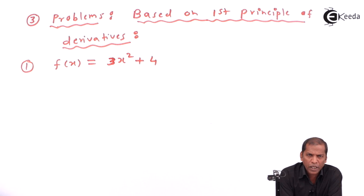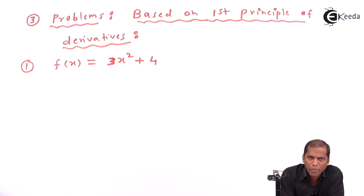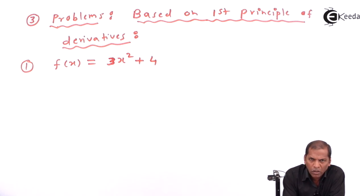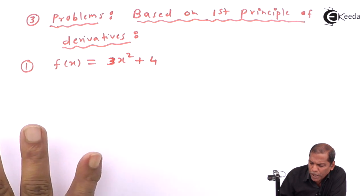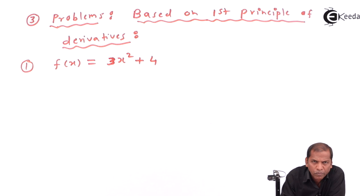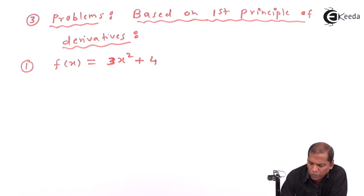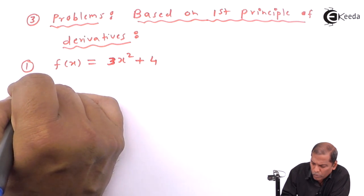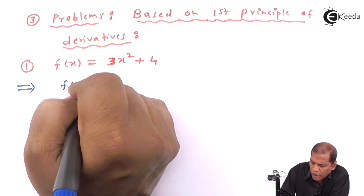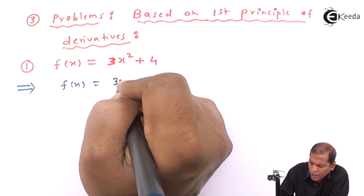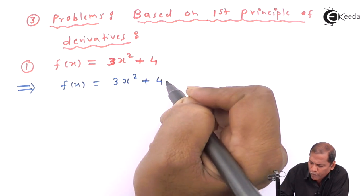Hello friends. Now we see subtopic 3, which is based on problems using the first principle of derivatives. Question number 1: f(x) is given as 3x² + 4, and here we have to find the derivative by using the first principle of derivative. Now let's see the solution. We start with given that f(x) is equal to 3x² + 4.